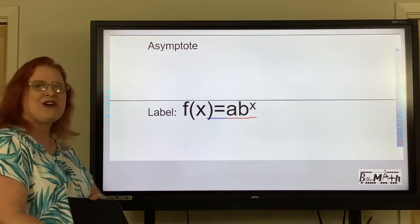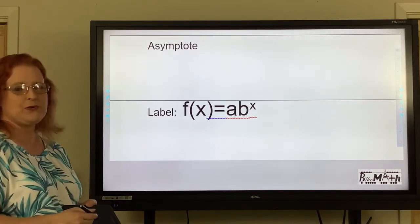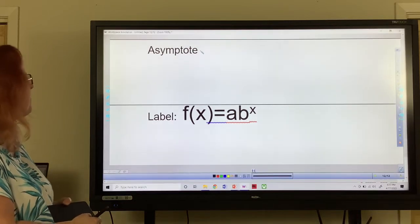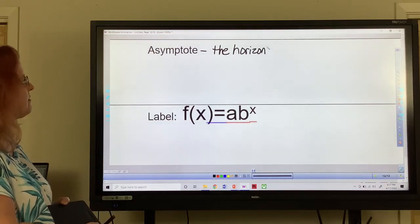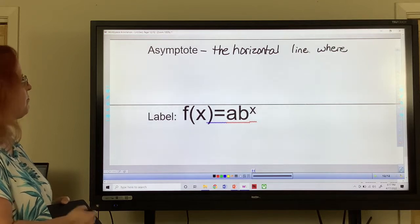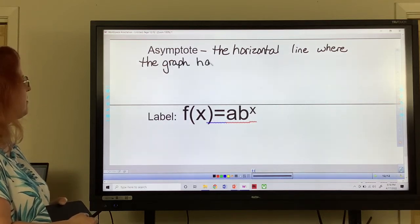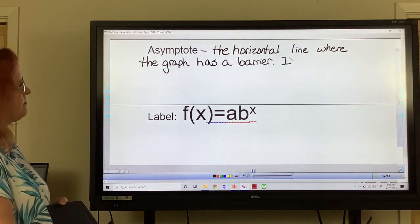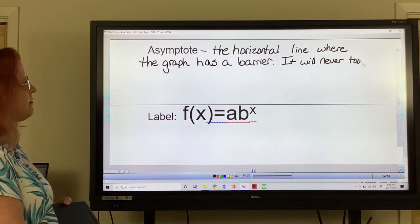Okay, so our favorite word, asymptote. So what an asymptote is, is this is the line. Oh, let me get my marker. And this is important. Horizontal. So it's the horizontal line where the graph has a barrier. It will never touch. It looks like it's touching it, but it's not. It will never touch it.